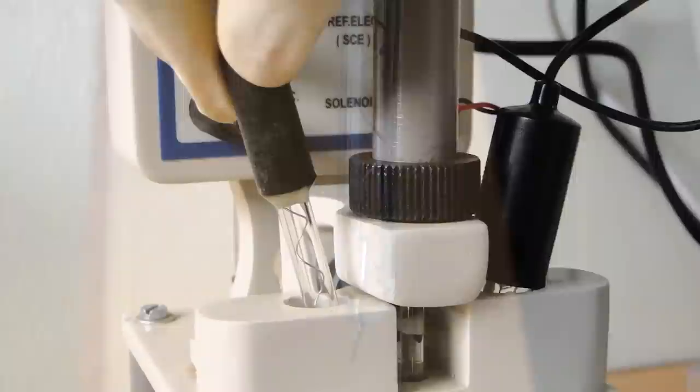Now fill mercury into the Tygon tube through the mercury reservoir bulb. Adjust the drop set and scan the sample.